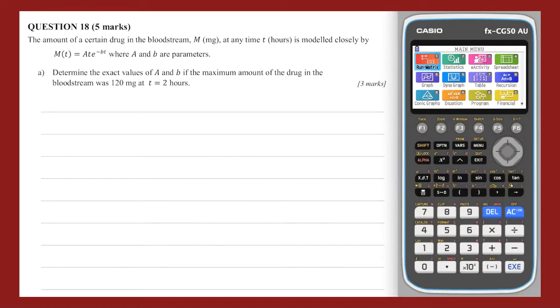Question 18. In this question, we are given a model for the amount of drug in a bloodstream. This model contains two unknown parameters, A and B. To find the exact values of A and B, I'll need to generate equations based on the fact that the drug was at a maximum of 120 mg when t equals 2. Given that part of this information, the maximum, relates to the derivative m'(t), I'm going to start by finding this derivative.